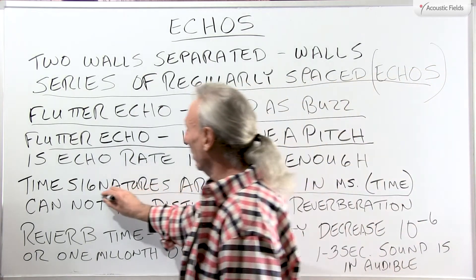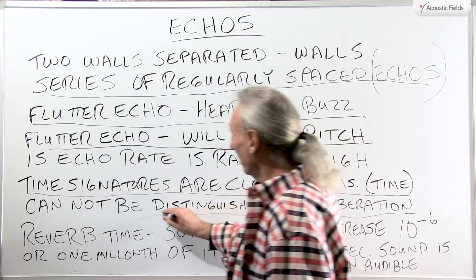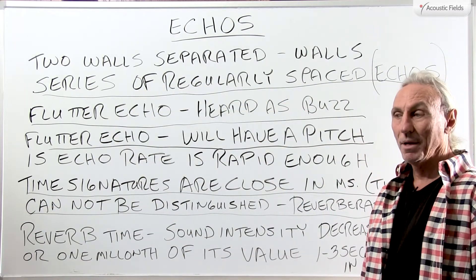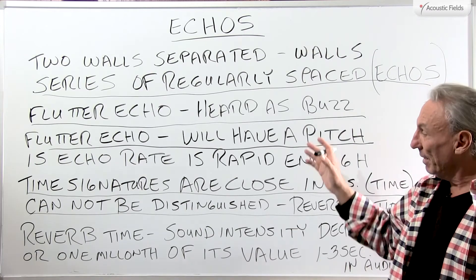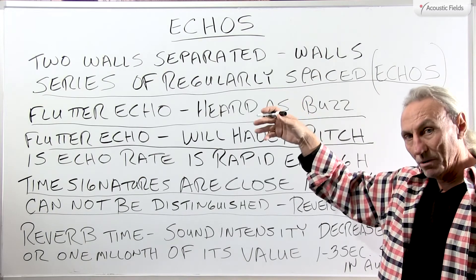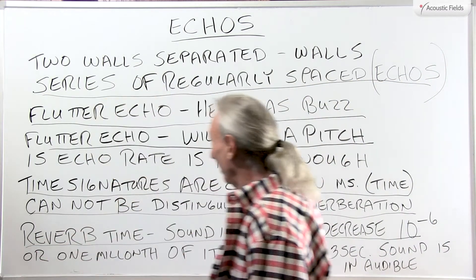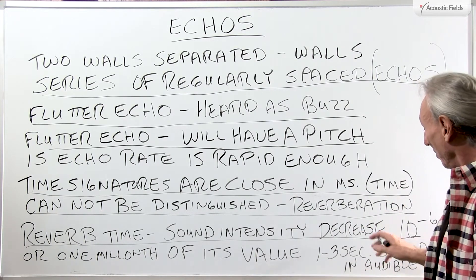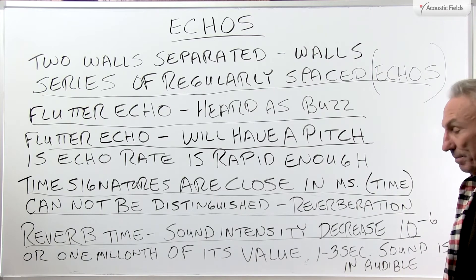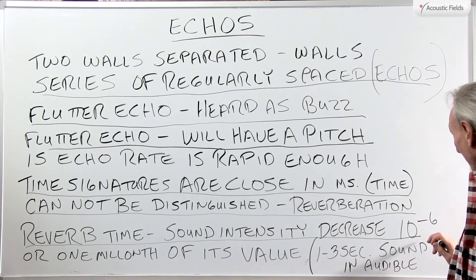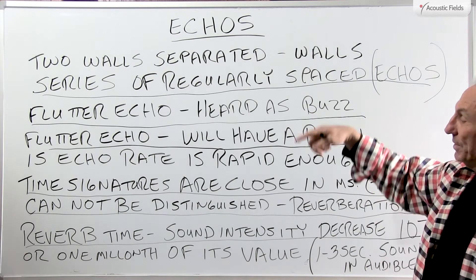When the time signatures are close in milliseconds and past that 20 millisecond mark, you can't distinguish between direct and reflected energy — that's when inaudibility comes into play, and that's where we get the term reverberation. We'll go through reverberation in another video, but echoes and flutter echoes are the starting point of what we call reverberation. In order to reach the point of inaudibility, we have to decrease the energy by one millionth of its value, or ten to the minus six. Any RT60 time in the one to three second range or over will produce that kind of inaudibility.